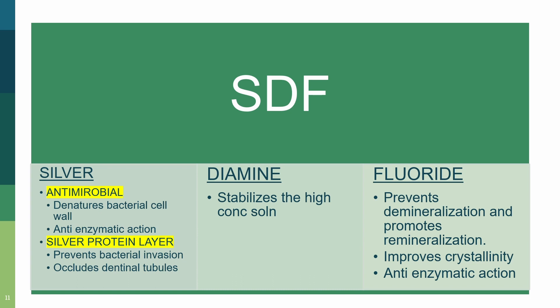Let's look at the individual components of SDF — silver, diamine, and fluoride. Silver plays two roles: one is being an antimicrobial agent, and the other is creating a silver protein layer. As an antimicrobial agent, silver causes the bacterial cell wall to denature and has an anti-enzymatic activity — acting against any destructive enzymes released by bacteria. By creating the silver protein layer, it prevents bacteria from invading the tooth and occludes the dentinal tubules, helping with dentine hypersensitivity.